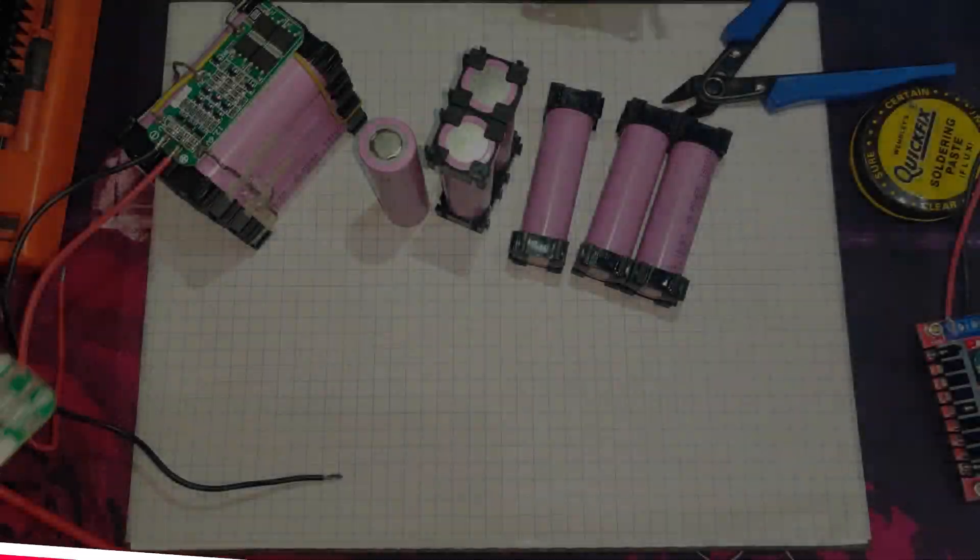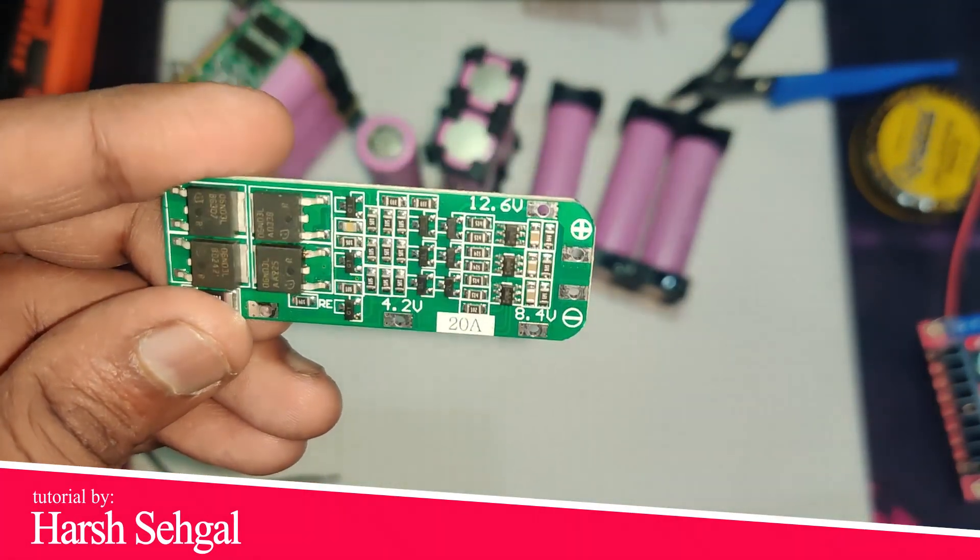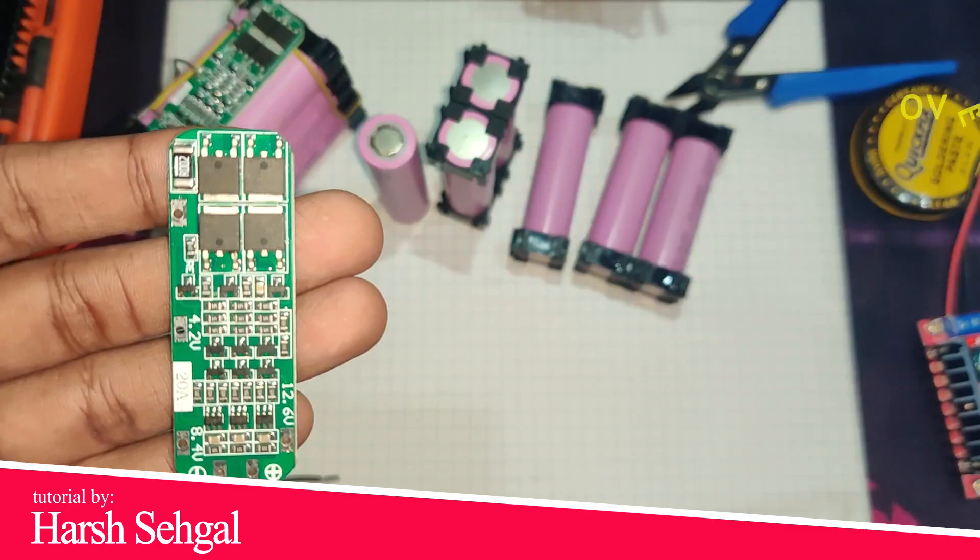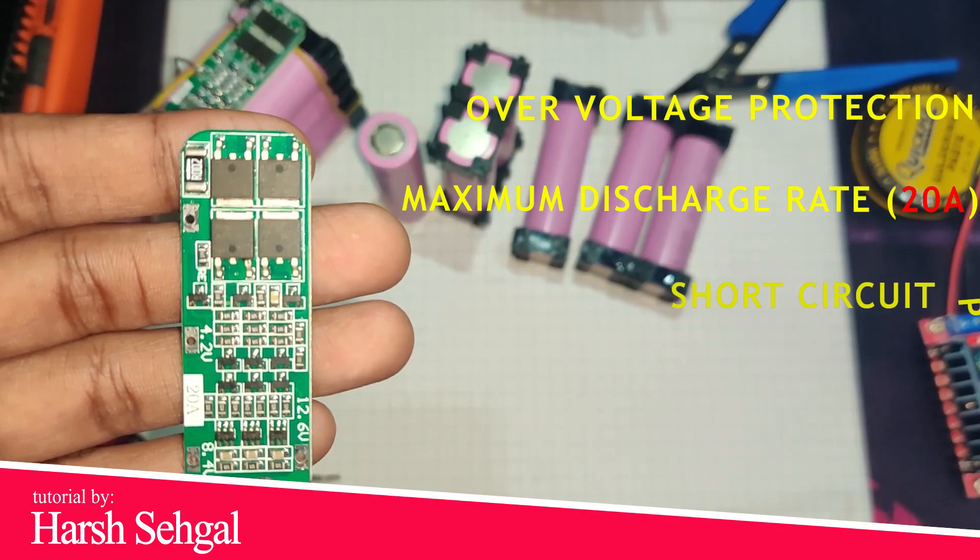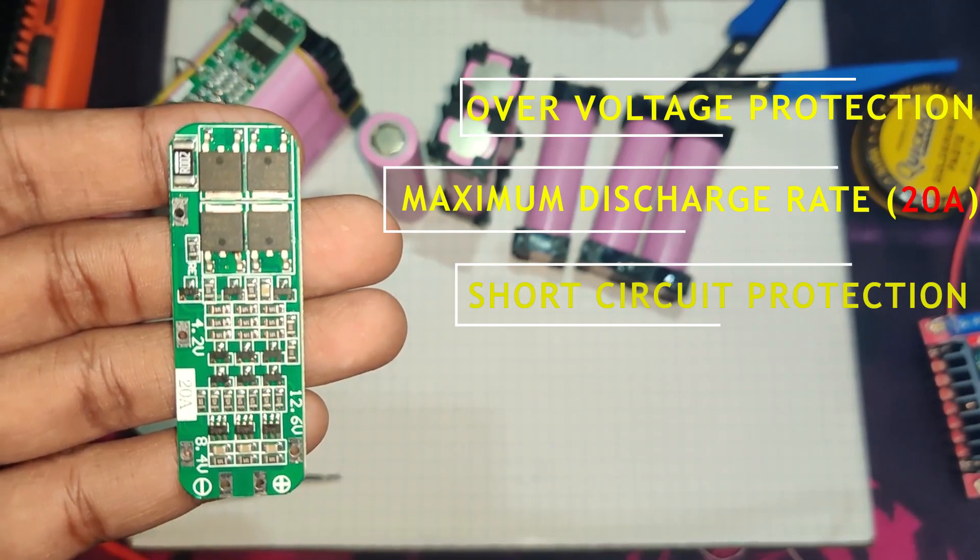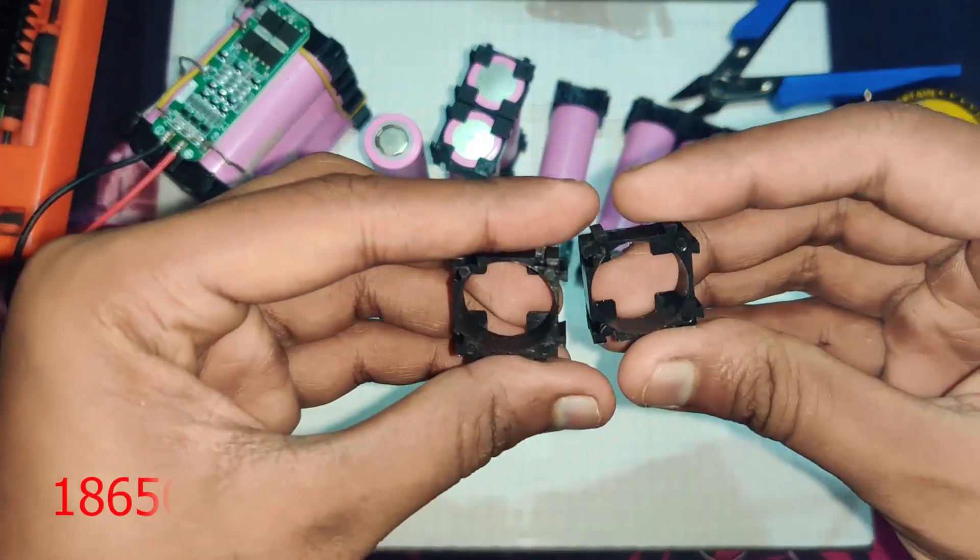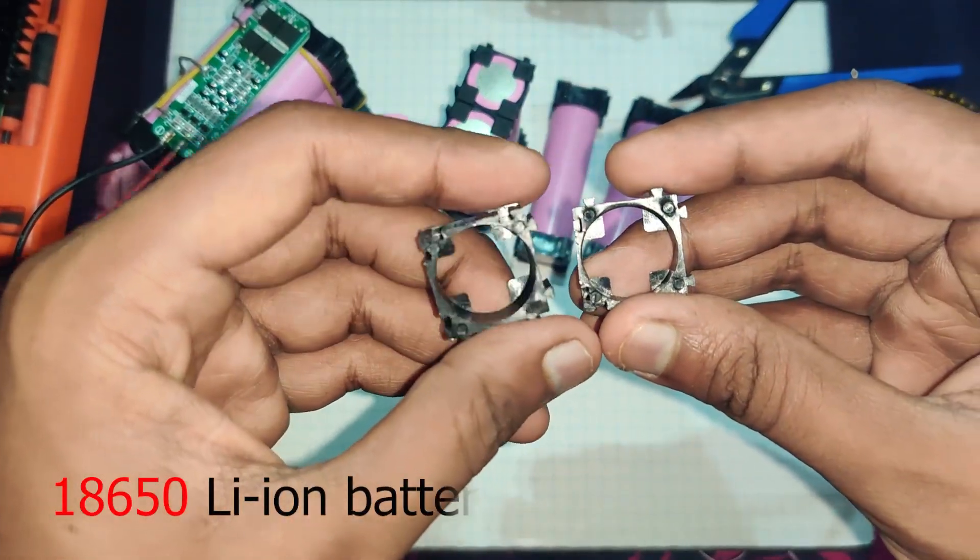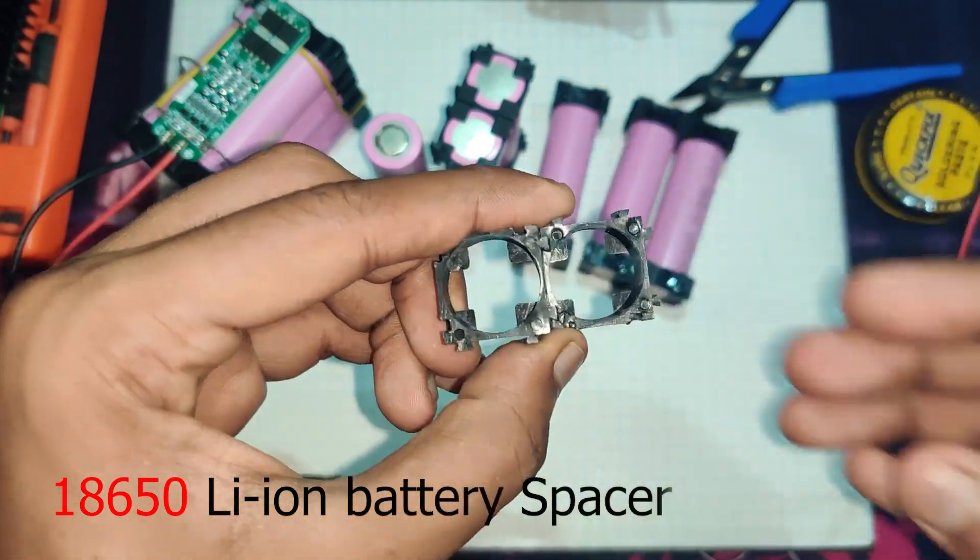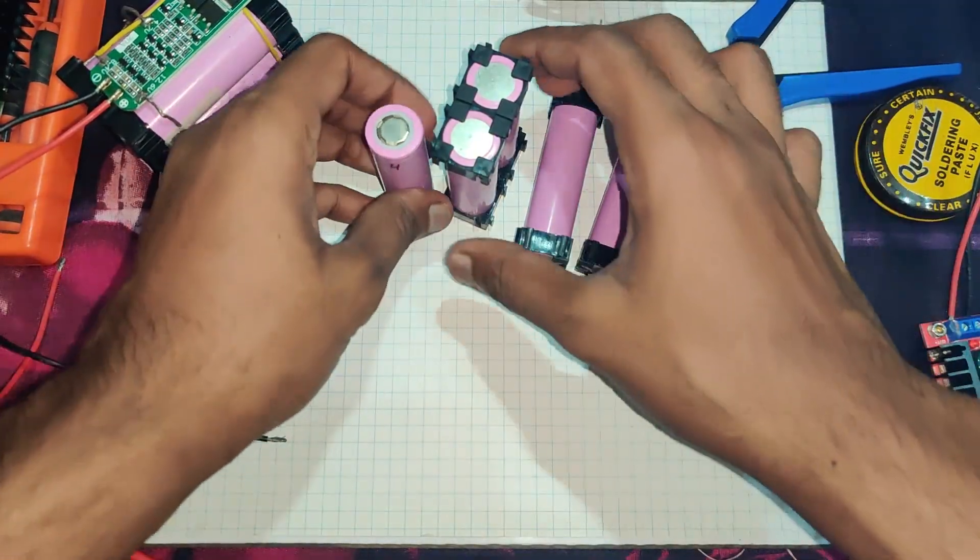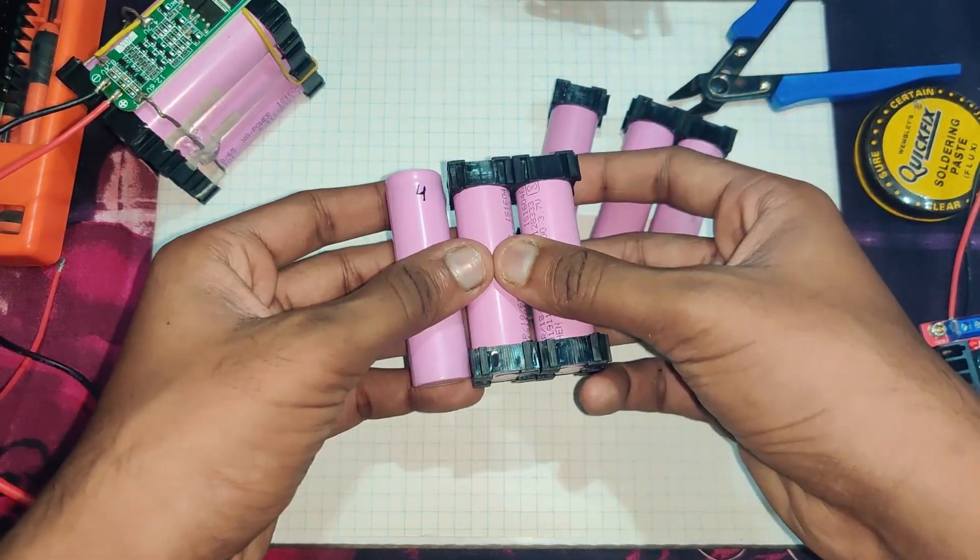I'm using a 3S BMS circuit. The BMS circuit provides the battery pack over-voltage protection, maximum discharge rate, and short circuit protection. I'm also using these spacers to provide appropriate space between each cell. Now I am going to arrange these cells in 3S 2P arrangement.